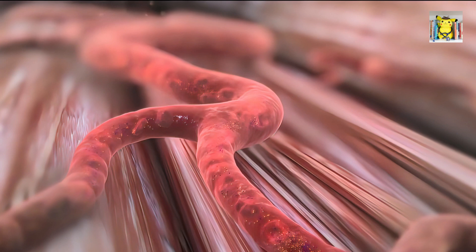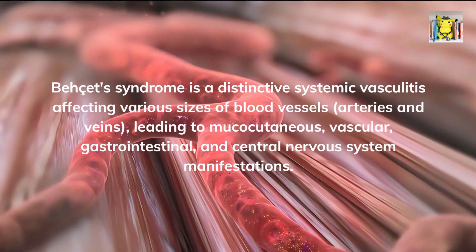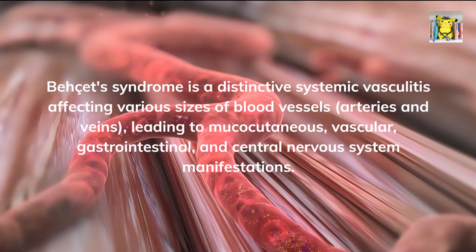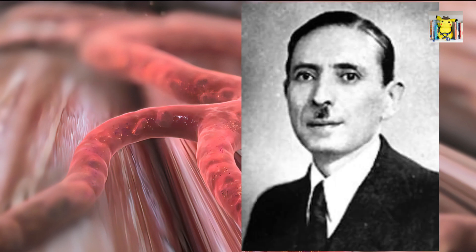Hello everybody. We are going to talk about a unique vasculitis syndrome called Behçet's syndrome. Behçet's syndrome is a distinctive systemic vasculitis affecting various sizes of blood vessels — arteries and veins — leading to mucocutaneous, vascular, gastrointestinal, and central nervous system manifestations. The disease is named after Halusi Behçet, a Turkish dermatologist who first described it in 1937.